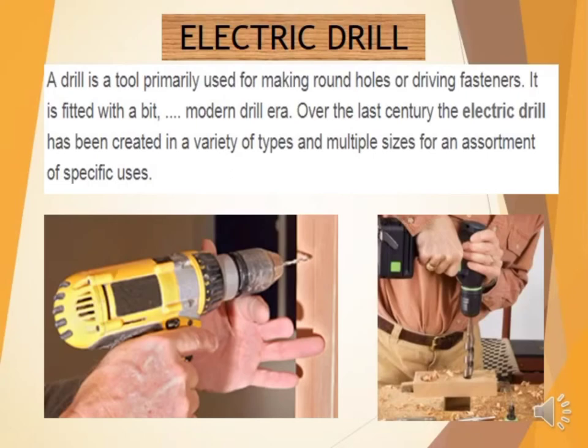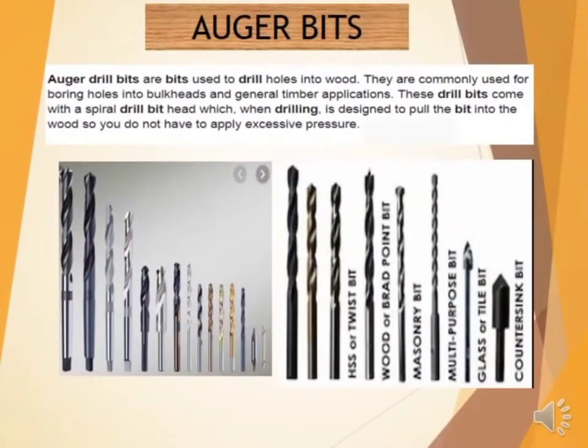Then, we have Auger Bits — auger drill bits are used to drill holes into wood. They are commonly used for boring holes in timber, book heads, and general timber applications. These drill bits come with a spiral drill bit head which, when drilling, is designed to pull the bit into the wood so you don't have to apply excessive pressure.